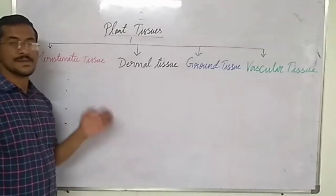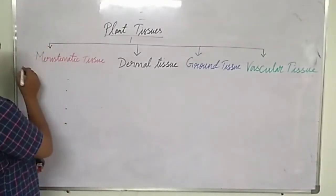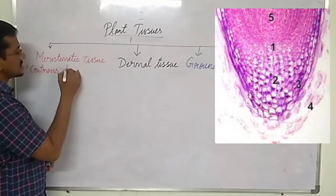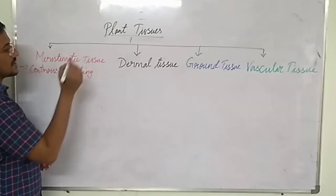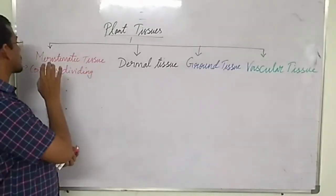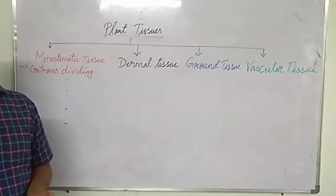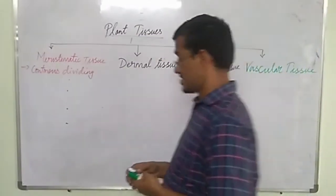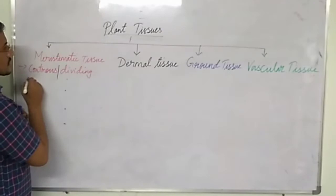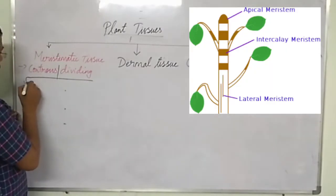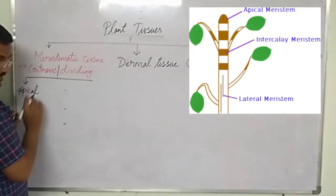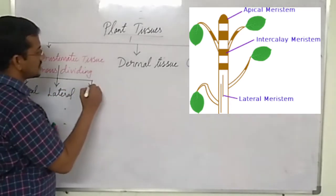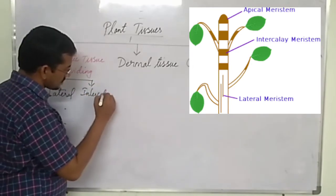Meristematic tissue is a continuously dividing tissue, and it is further divided into three types: apical meristematic tissue, lateral meristematic tissue, and intercalary meristematic tissue.